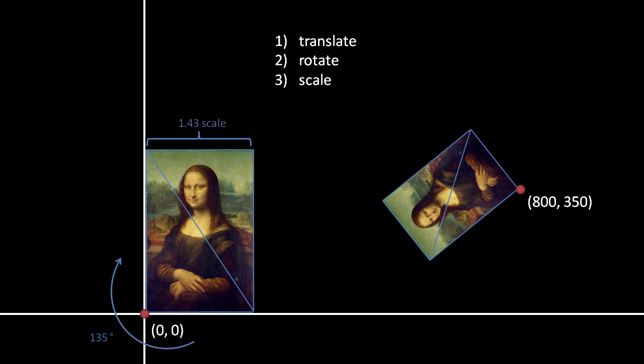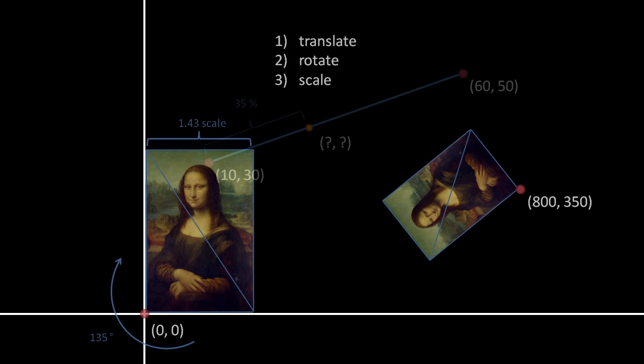While we now have a workable solution that produces good quality results, the sticking point is that this process is rather slow, because for each pixel we're doing a translation, rotation, and scaling operation. To simplify the amount of work done per pixel and thus speed up the job, we can use interpolation.